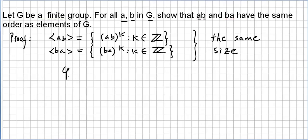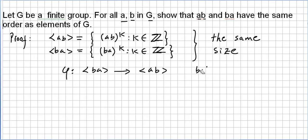To show they have the same size, we only need to find a bijection from the set ⟨ba⟩ to the set ⟨ab⟩. If we can find such a bijection φ from ⟨ba⟩ to ⟨ab⟩, then since it is a bijection, the two sets must have the same size.